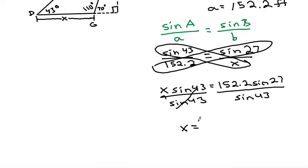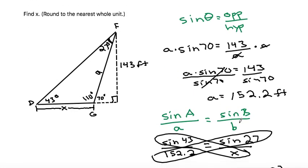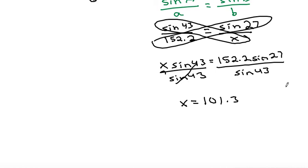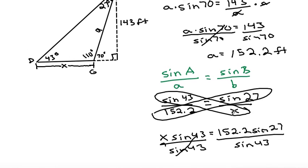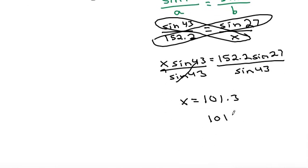I get that to be 101.3, but the problem said to round to the nearest whole unit, so that would be 101. And the unit was feet. So it would be x is equal to 101 feet.